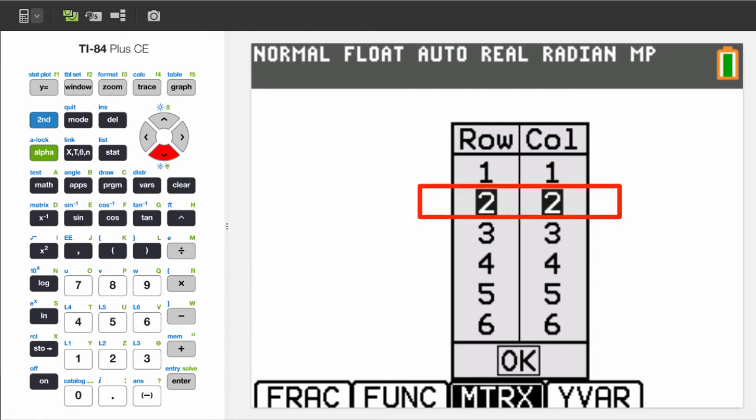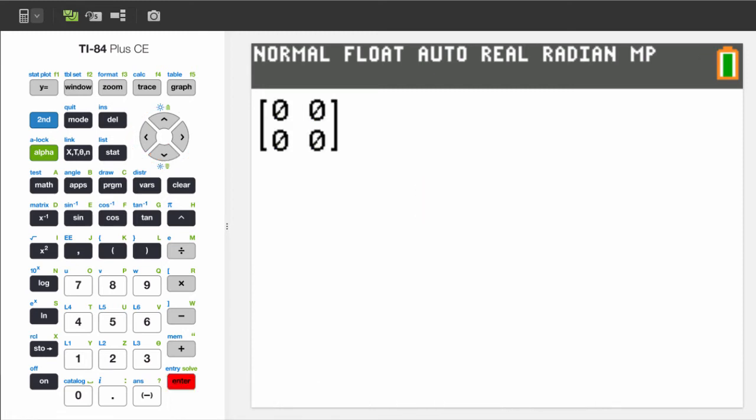By default it's set to 2 by 2. You'll see a matrix added to your screen with zeros. Use the arrow keys to replace the zeros with the actual numbers.